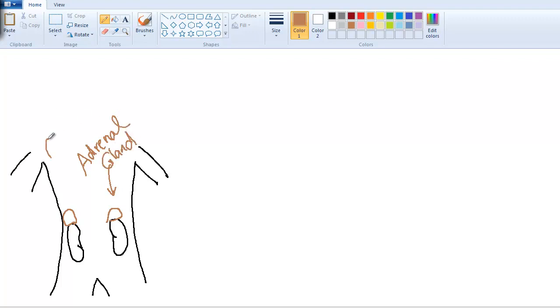Those are the kidneys. And the gland that sits on top is the adrenal glands. Another name is the suprarenal gland. Supra means superior or above. Renal refers to the kidney. So suprarenal means above the kidney. It has two names.